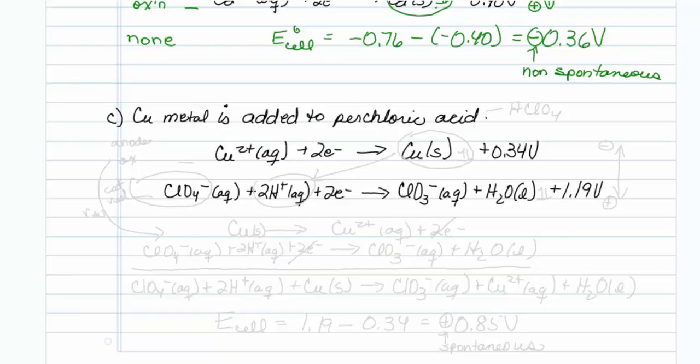Copper metal is added to perchloric acid. Once again, I have these listed properly. I have more negative on the top, more positive on the bottom. Empty orbitals here. Some electrons in orbitals here. And as you can see, copper metal, I'm hoping you decide, is copper solid with some electrons.